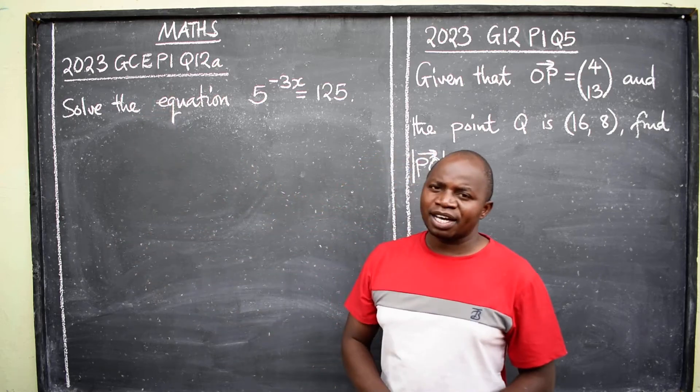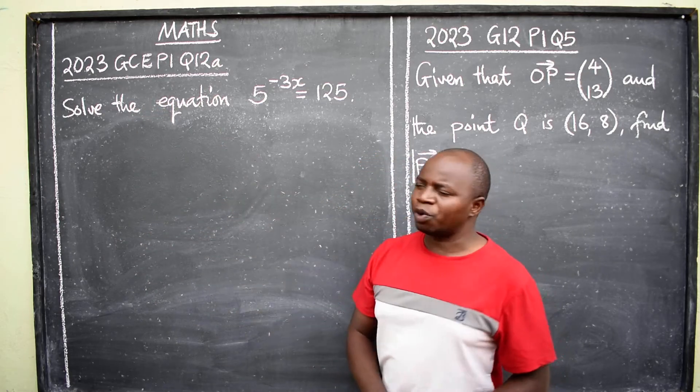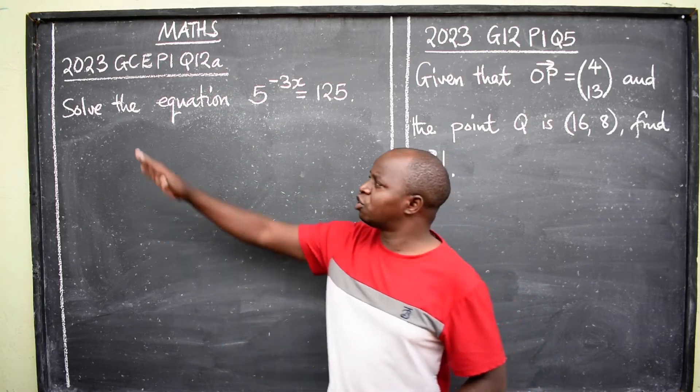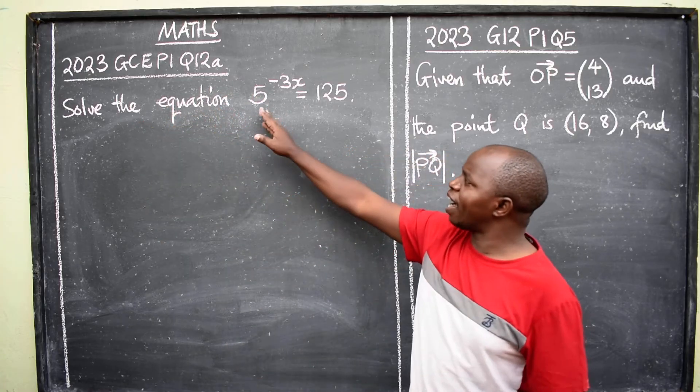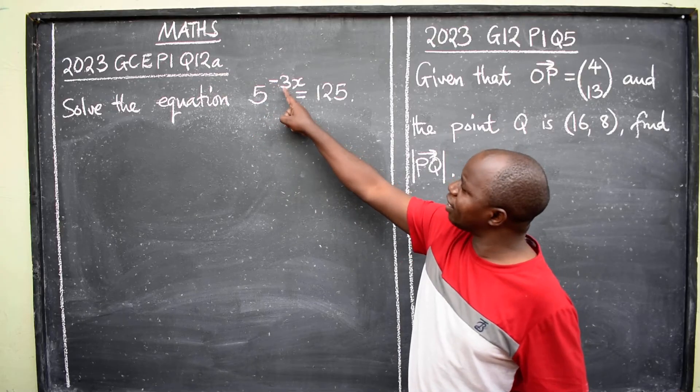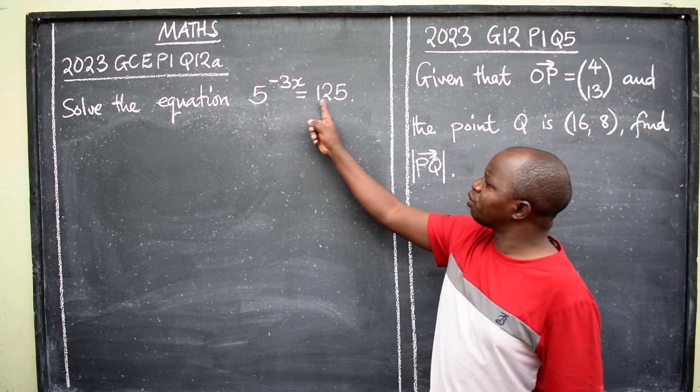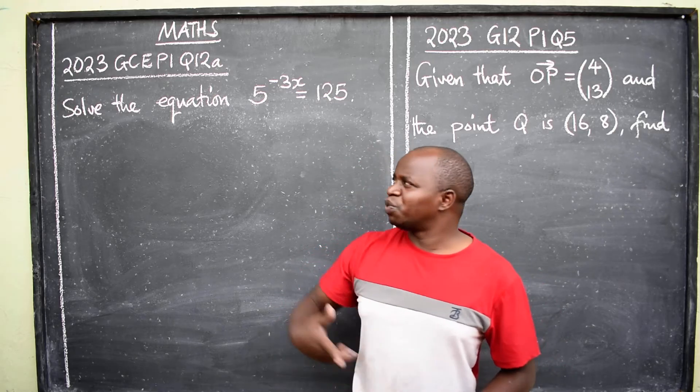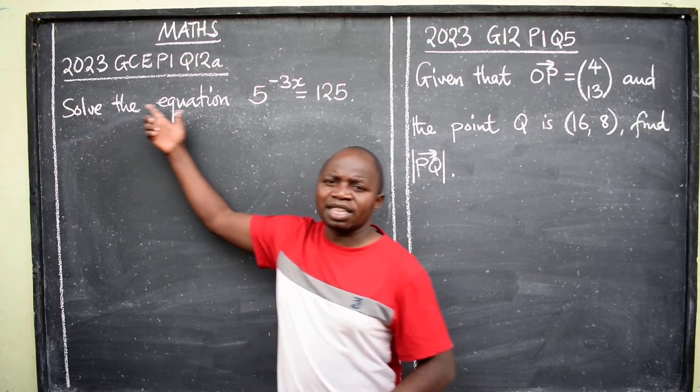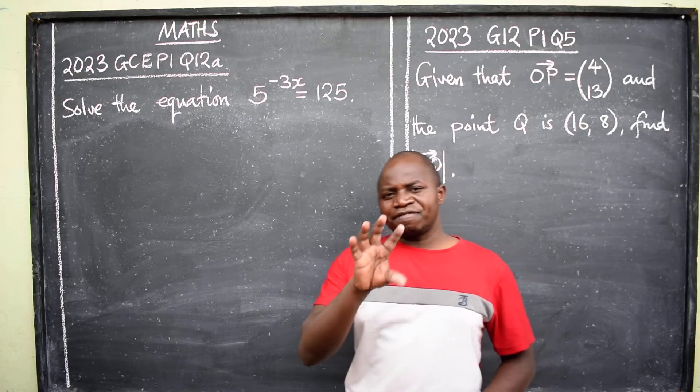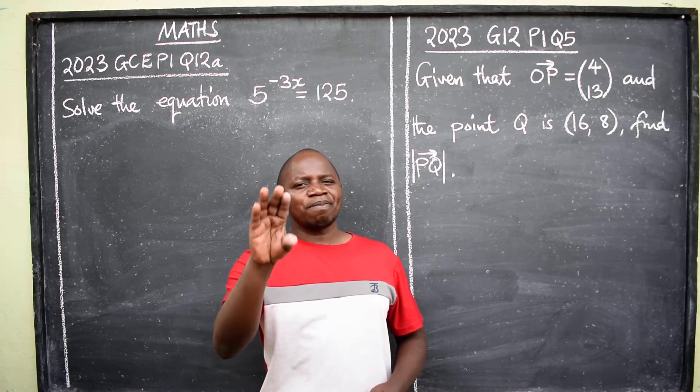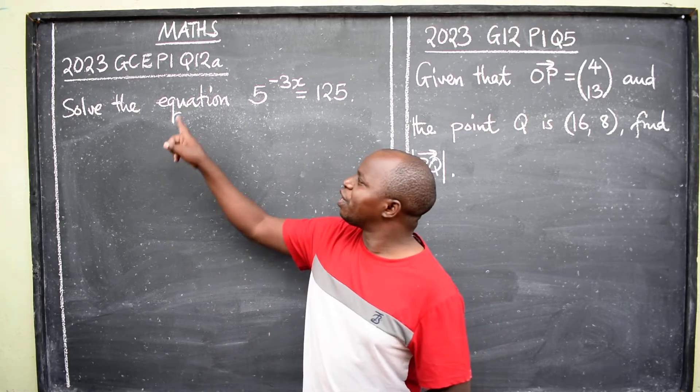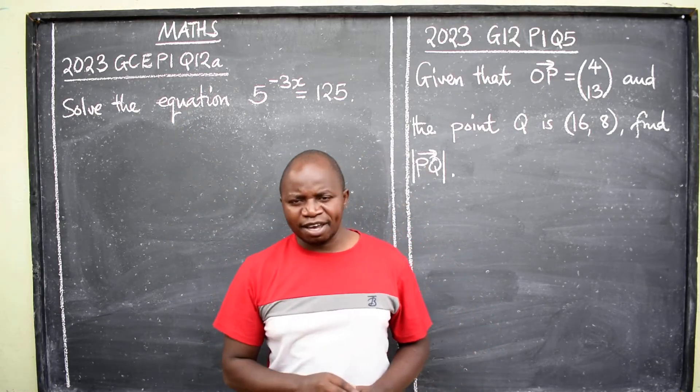We start with the 2023 GCE paper 1 question 12a: Solve the equation 5 raised to the power negative 3x is equal to 125. Well, we are told to solve the equation. The first thing that should come into your mind is to identify the type of equation that you've been given.